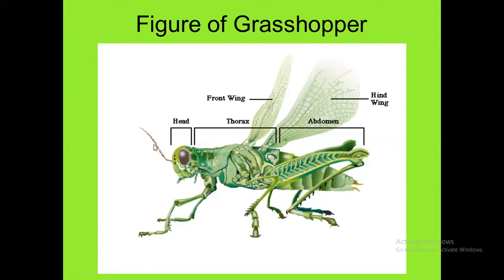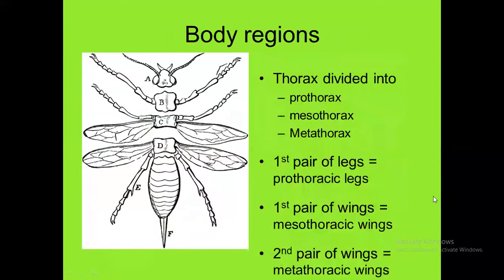The antenna is formed of 20 to 25 segments. The mouth is always directed downwards, so their head type is called hypognathous. Their body is divided into three regions: head, thorax, and abdomen.